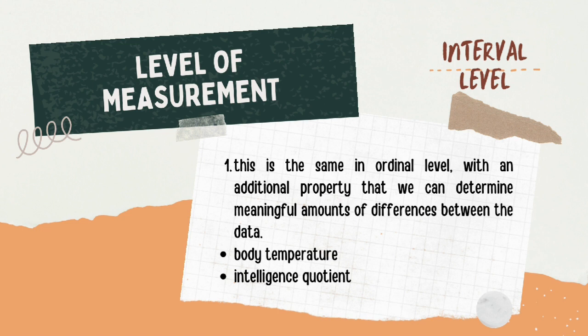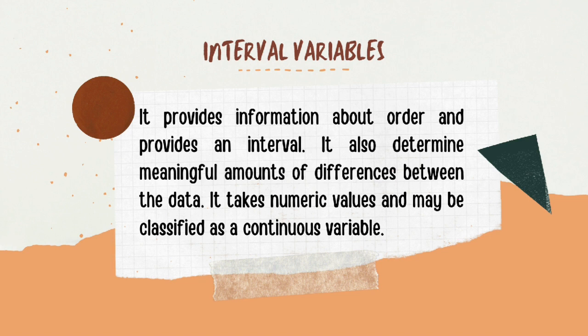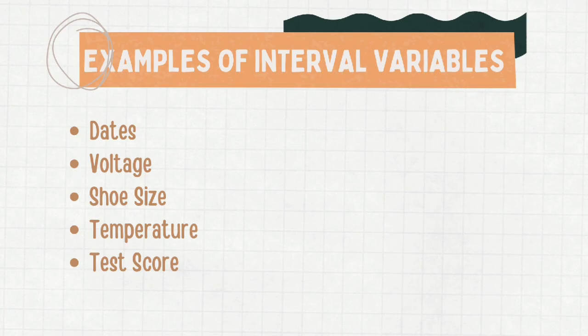Next is the interval level, which is similar to the ordinal level with the additional property that we can determine meaningful amounts of differences between the data. For example, Body Temperature and Intelligence Quotient. Interval variables provide information about order and an interval, take numeric values, and may be classified as a continuous variable. Examples include dates, voltage, shoe size, temperature, and test score.